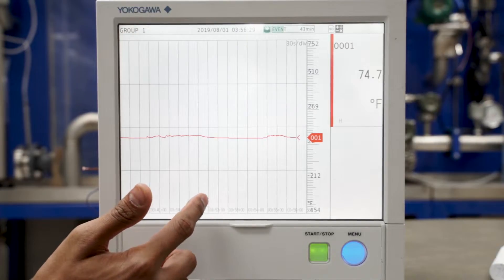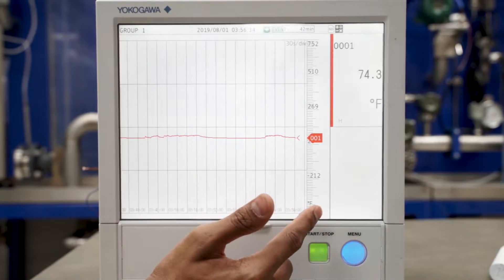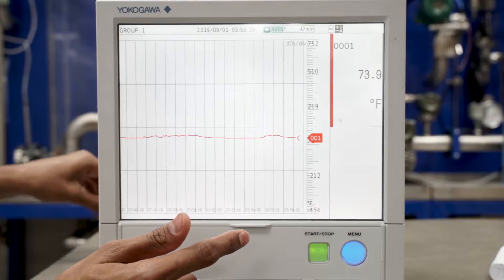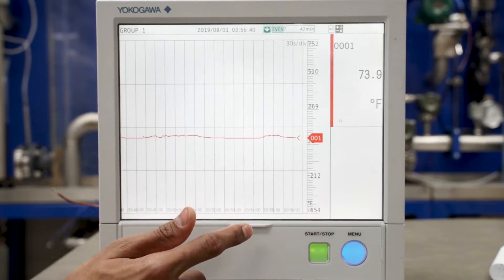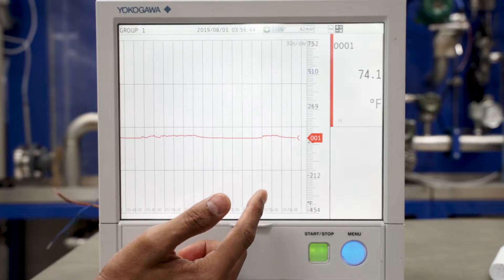As we can see displayed right here, this trend displays continuously recording live temperature data from a couple of thermocouple field inputs connected to the analog input module on the back of the unit. This trend thus graphs the varying temperature values over time.